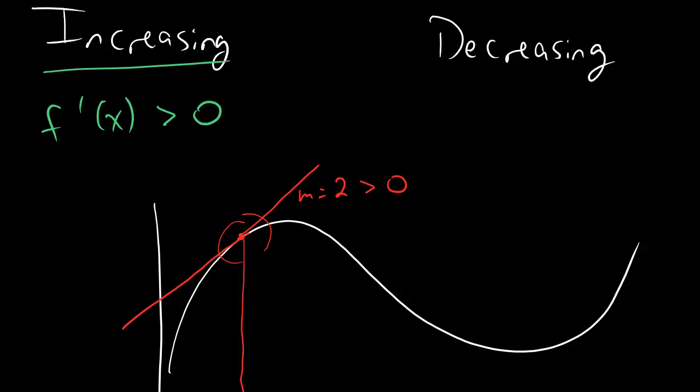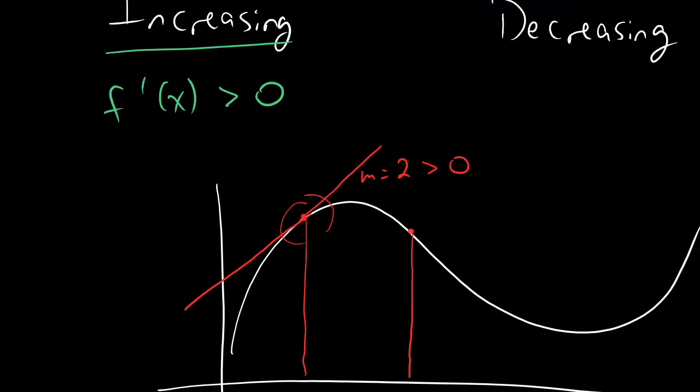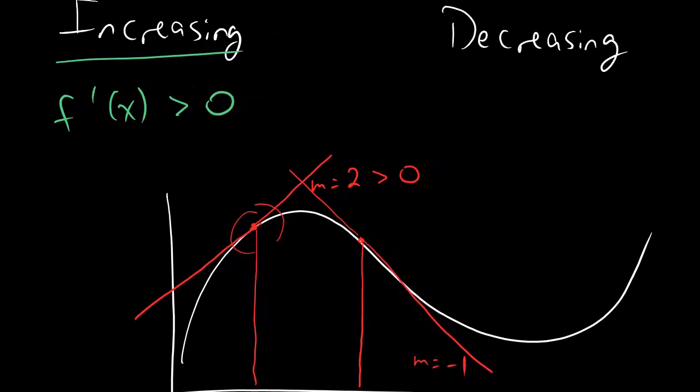And then kind of the same idea, let's look at another point, maybe right around here. If you look at the tangent line there, it just skims right along. Looks maybe a little something like that. You'll notice this might be like m equals negative 1, and so the slope is negative.